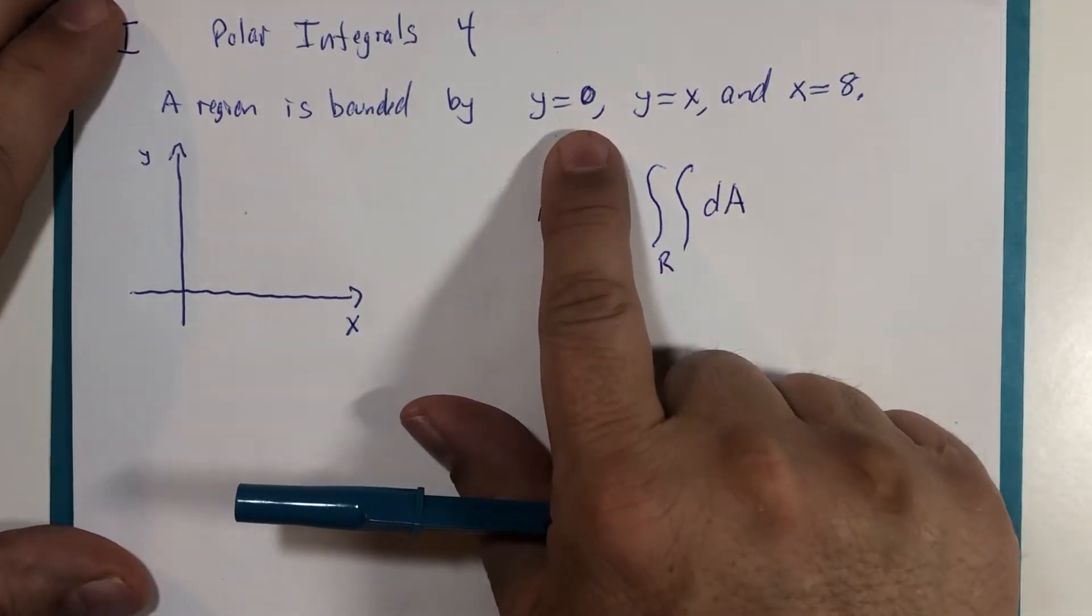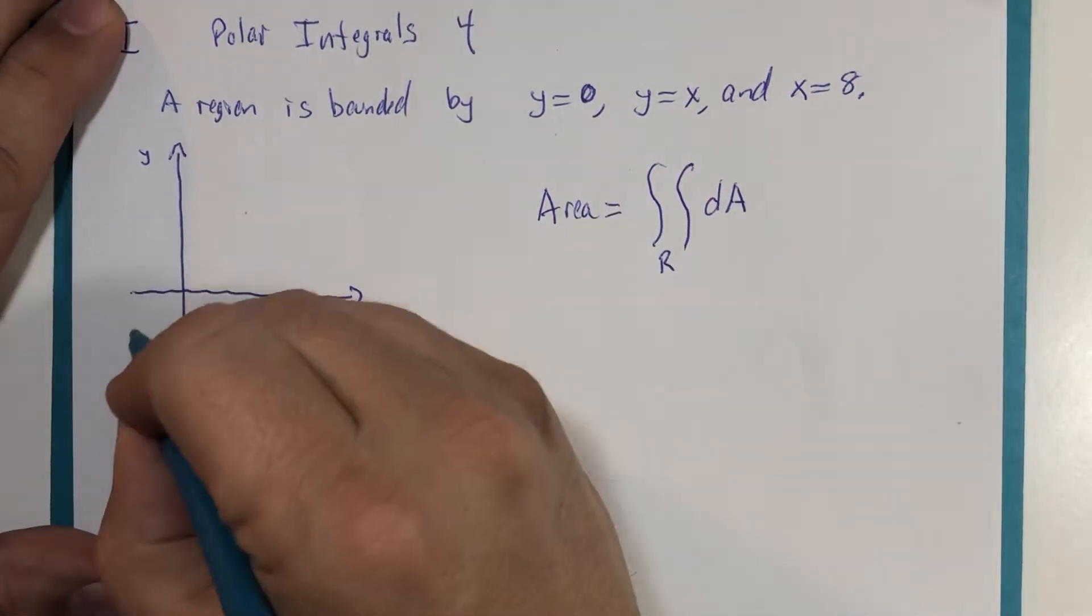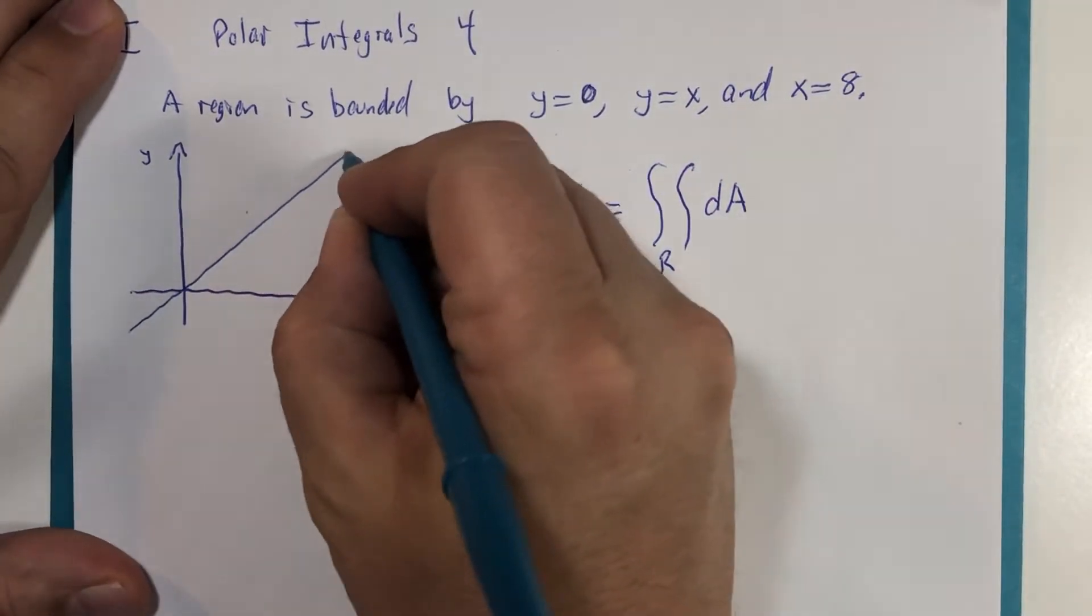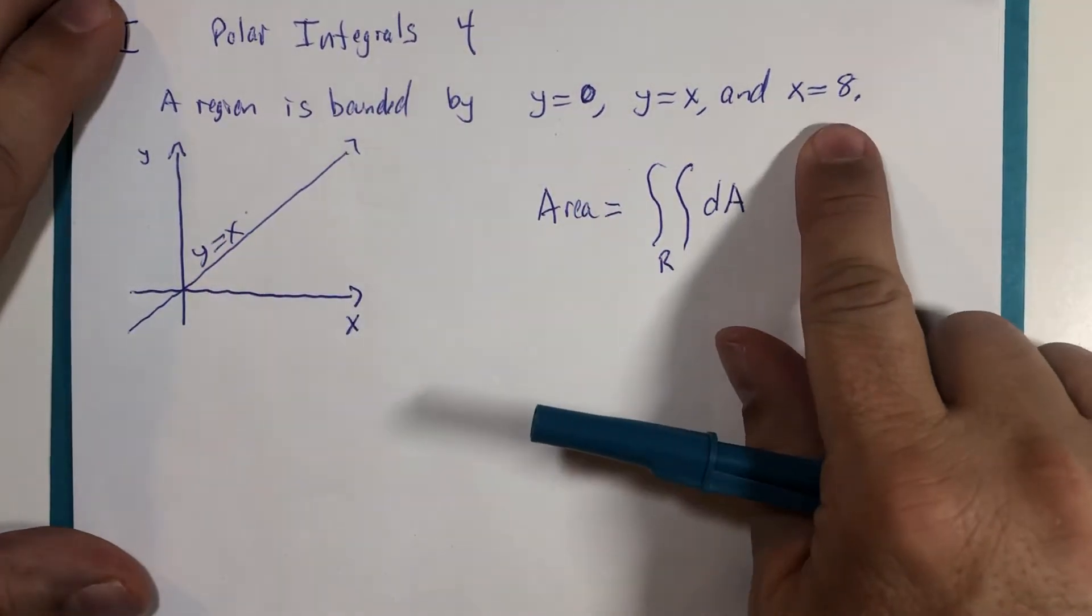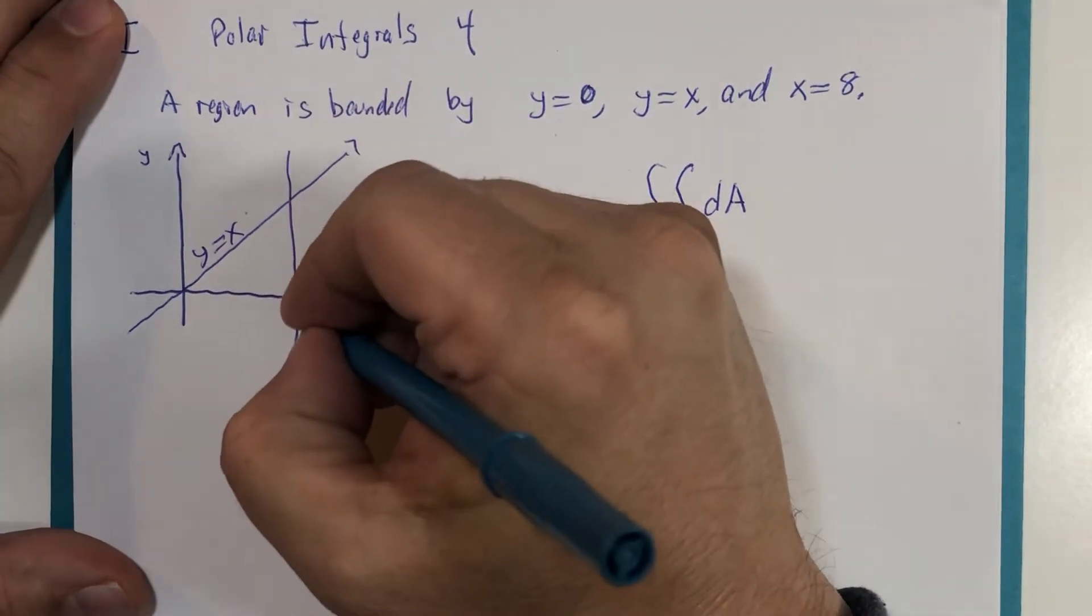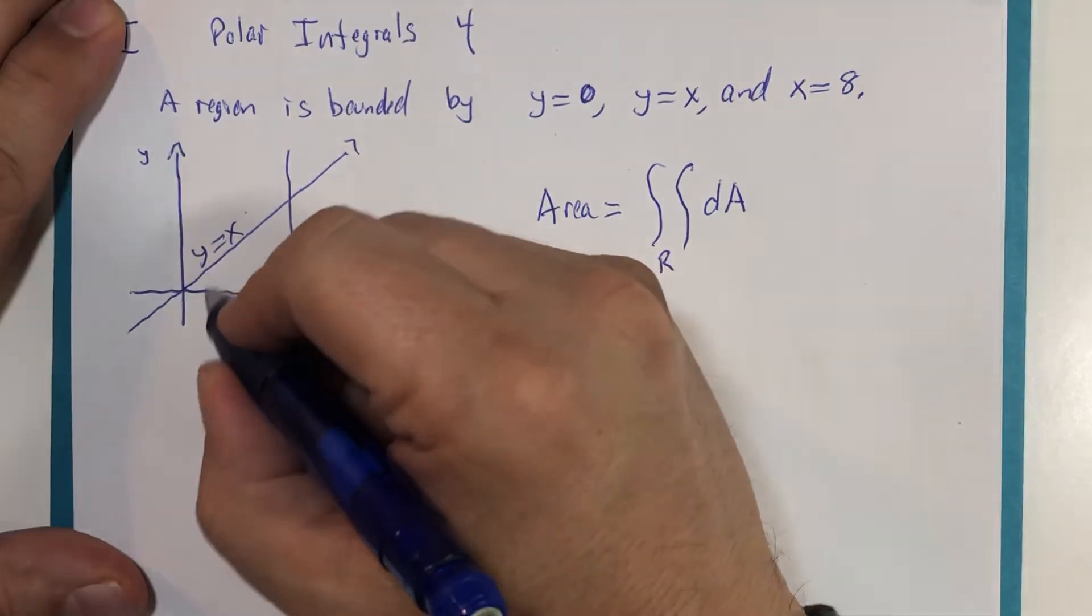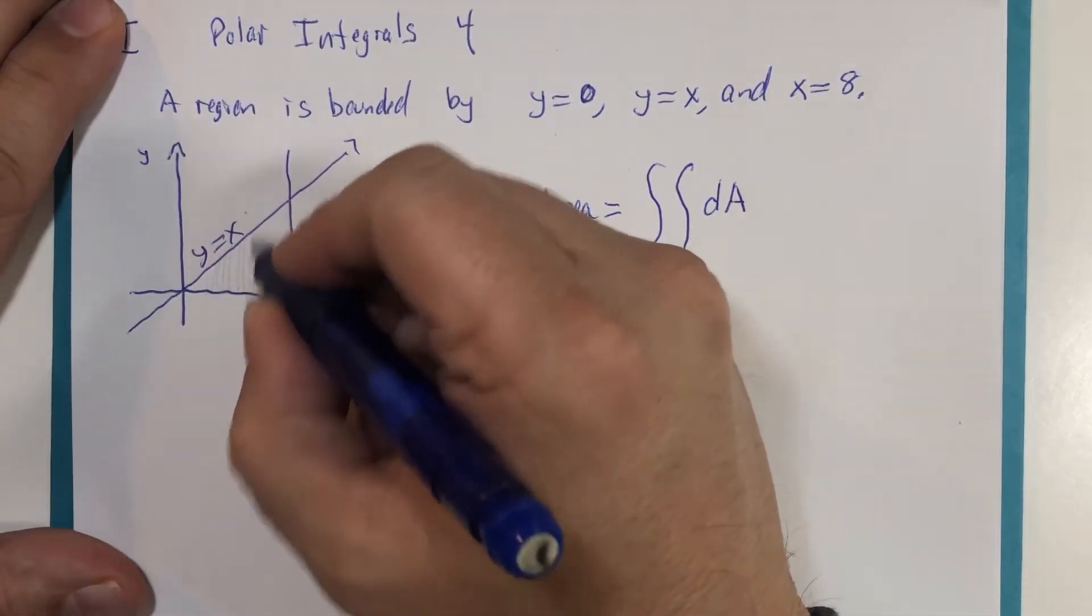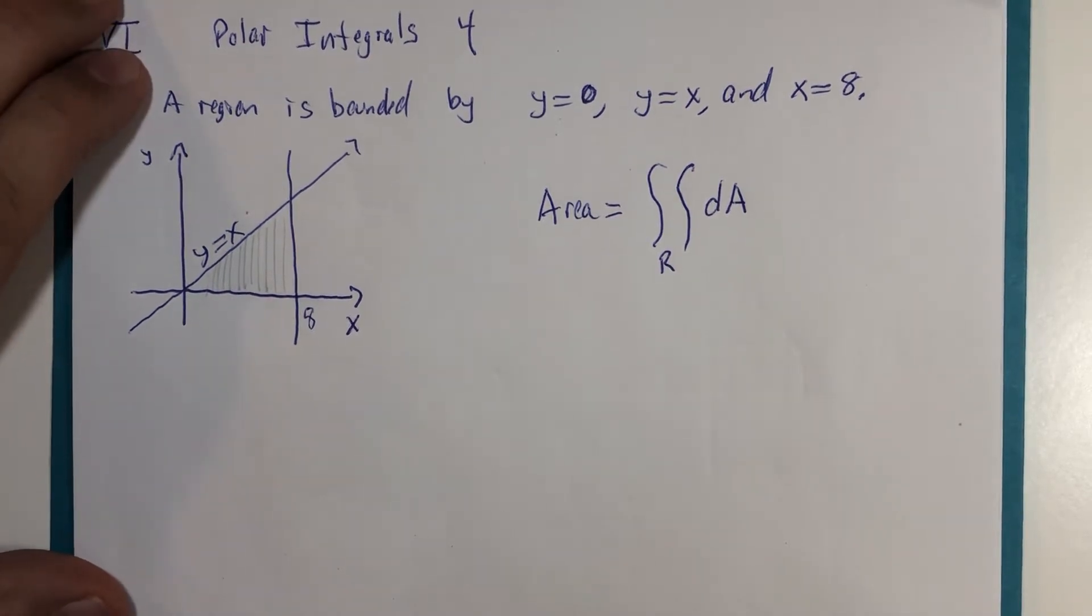y equals 0, that's right, it's the x-axis. y equals x, it's the following line. x equals 8, that's right, it's a vertical line. We are investigating this triangle. That's our region, bounded by the three graphs provided.